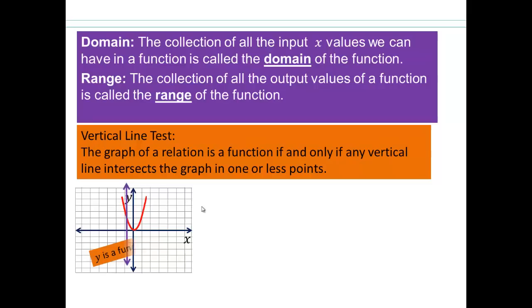If it intersects in any more than one point, then the relation would not be a function. So here, y is a function of x. Remember, again, we're looking at y being a function of x. And so since any input produces one output in every single point on this graph, you have y is a function of x.